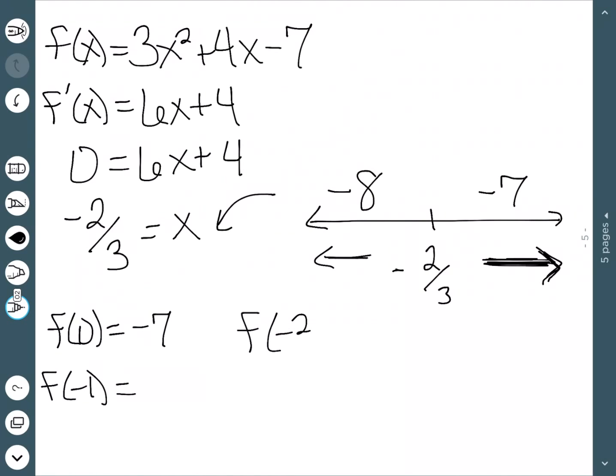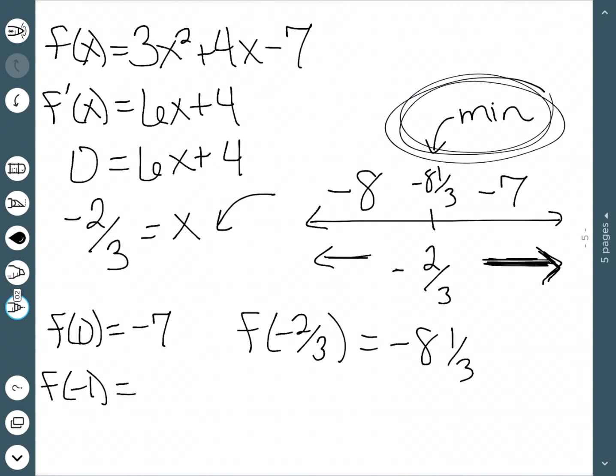What about actually at -2/3? What is f(-2/3)? Well, f(-2/3) is -8⅓. So you can see that this is actually smaller than the rest of these values. So this is a minimum.